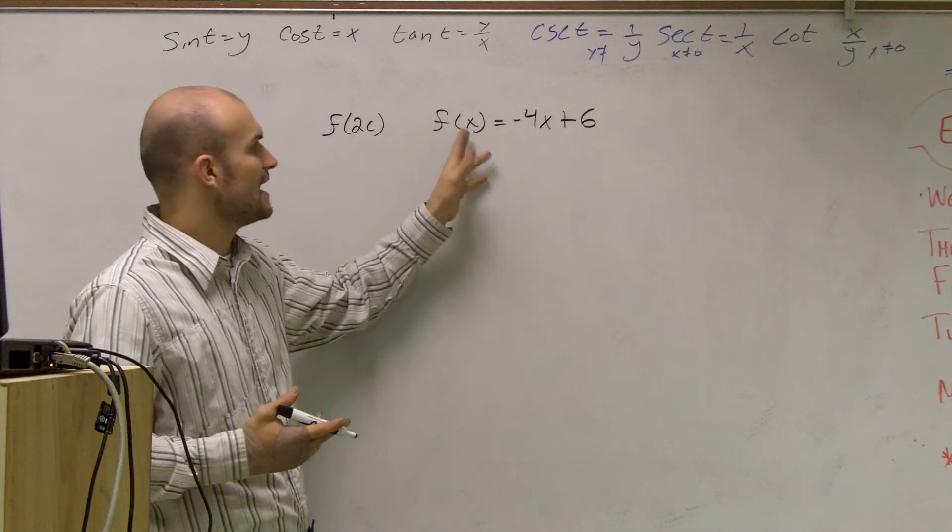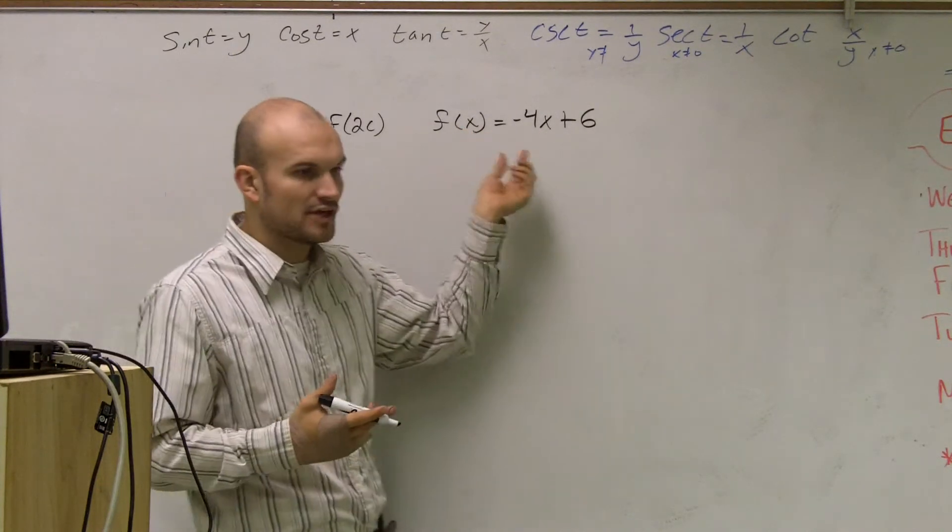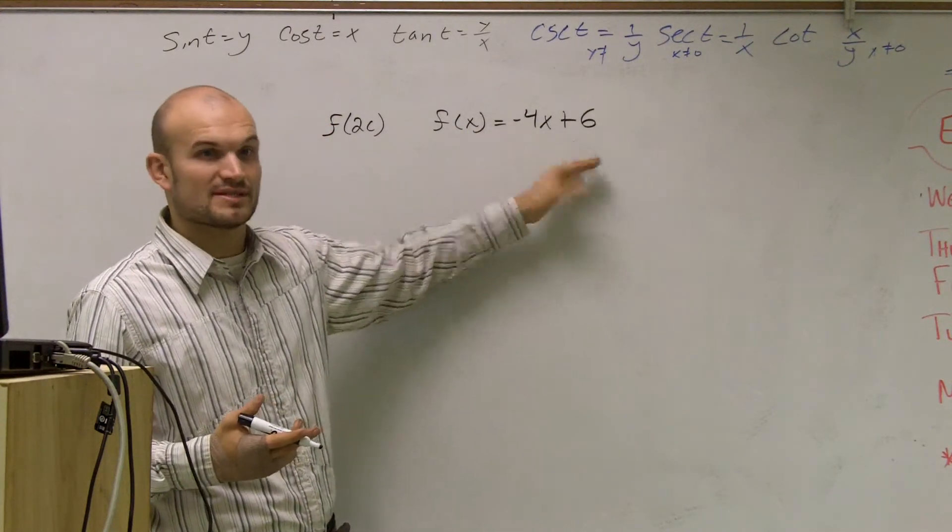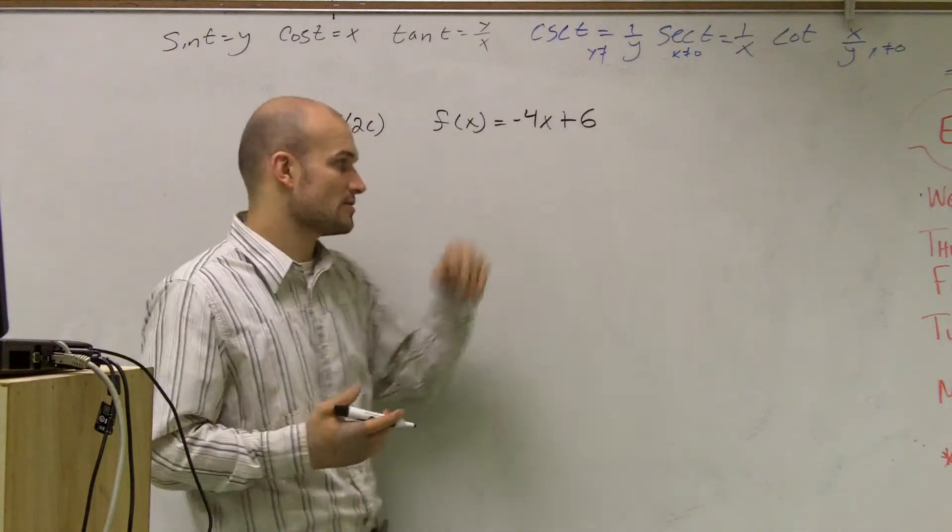So what they're saying is when you plug in x, or the value of my function at x is, at this point, negative 4x plus 6. So that is the relationship of the function.